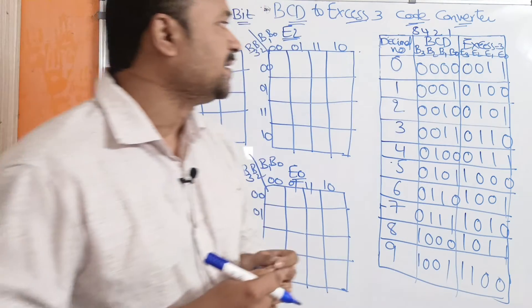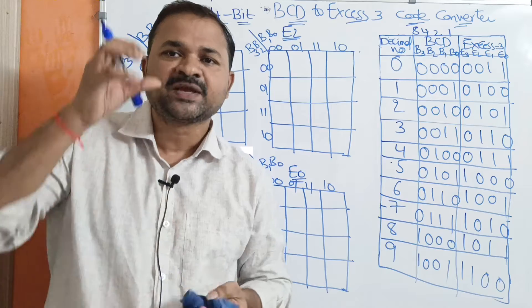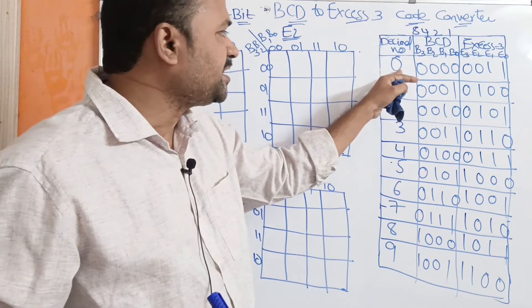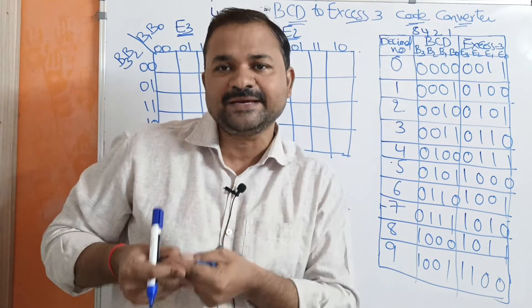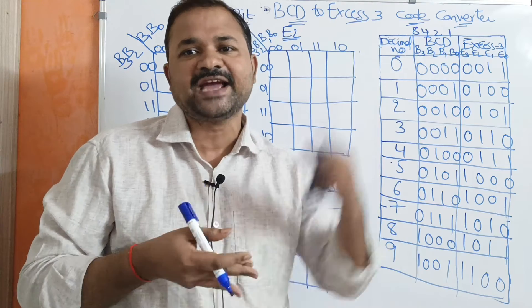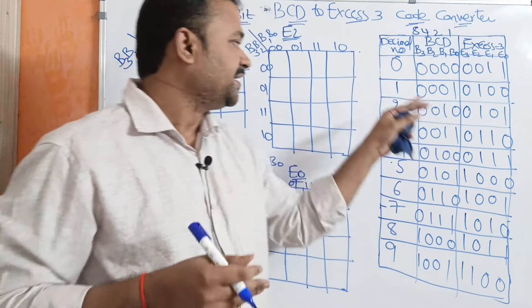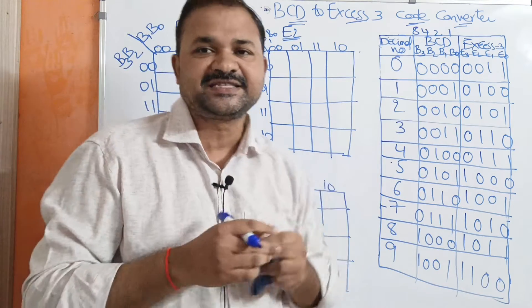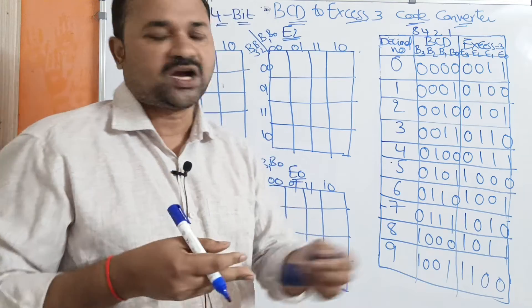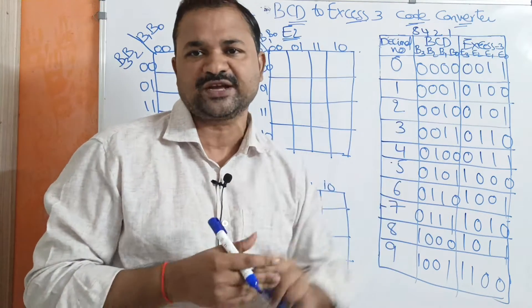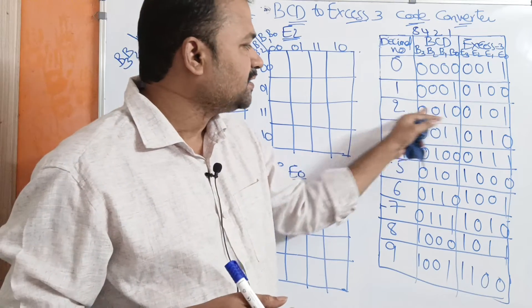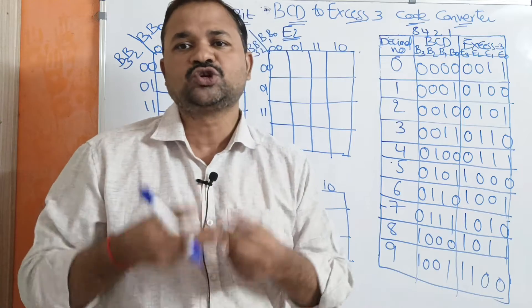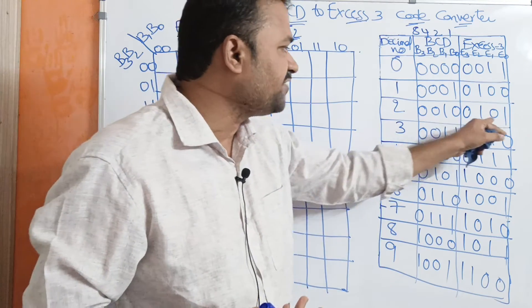Now let us obtain the XS3 code. XS3 code means we simply add 3 to the BCD number. So 0 plus 3 equals 3, represented as 0011 in 8421 notation. For 1: 1 plus 3 equals 4, represented as 0100. For 2: 2 plus 3 equals 5, represented as 0101.